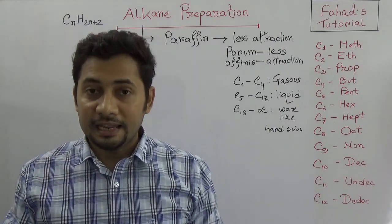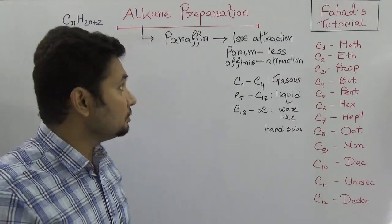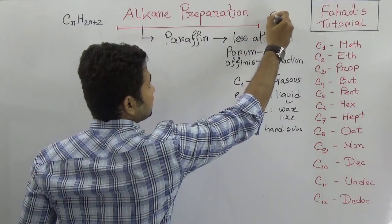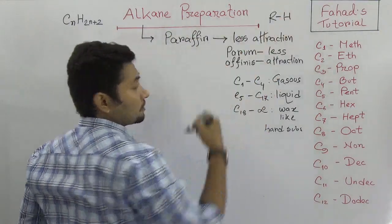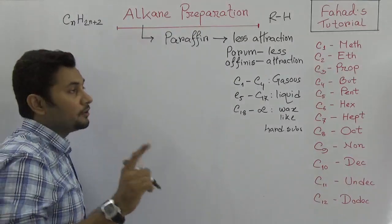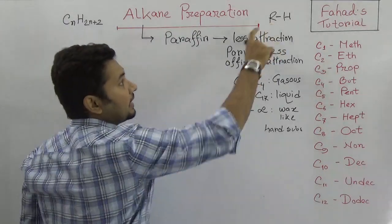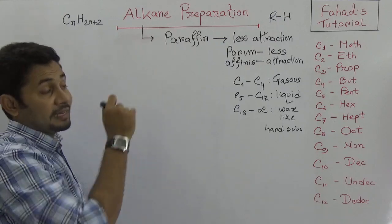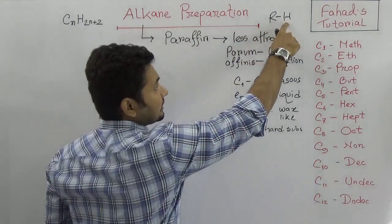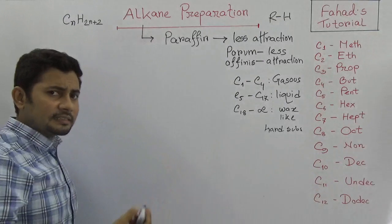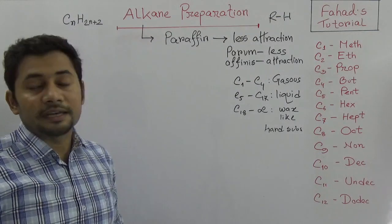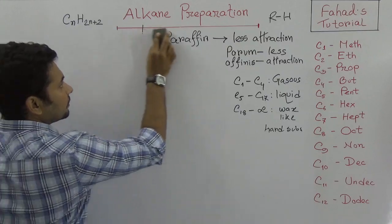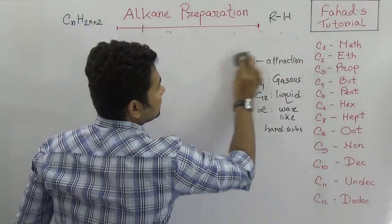Alkane is generally expressed as RH, where R is the alkyl group. A single hydrogen is added to the alkyl group to give the corresponding alkane. Now, how can we produce alkane? The first process is called decarboxylation.